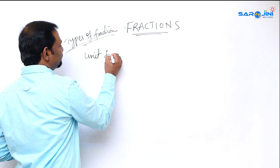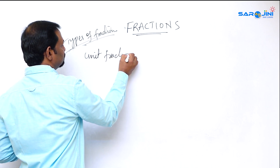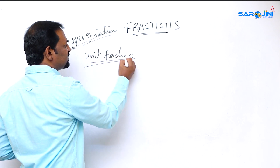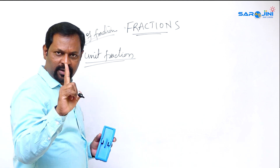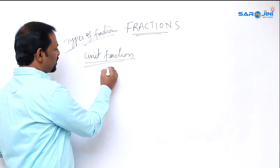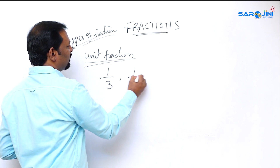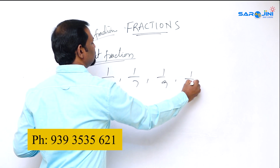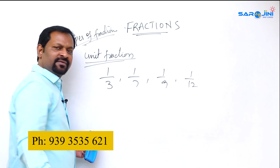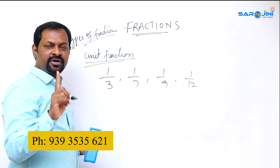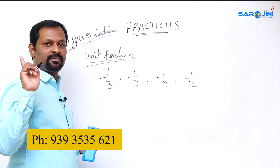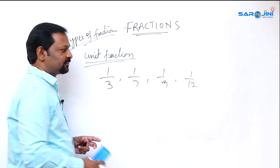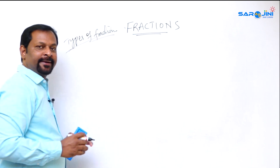Another type is called unit fractions. 'Unit' means one, so in a unit fraction the numerator is always one — for example, one by three, one by seven, one by nine. Whatever the denominator is, the numerator should be one.